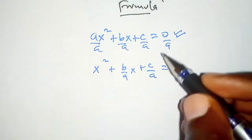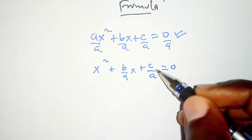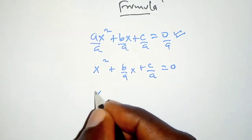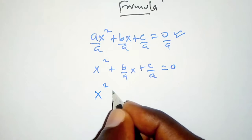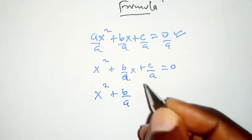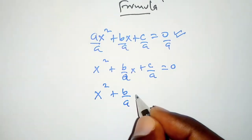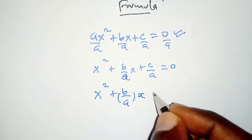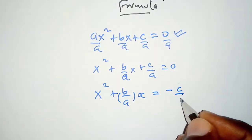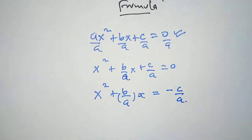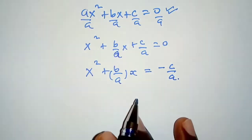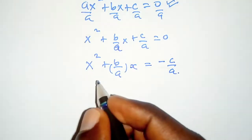Once we are done with that, we can take this constant term to the right hand side, so that we have x squared plus b over a times x equals negative c over a.